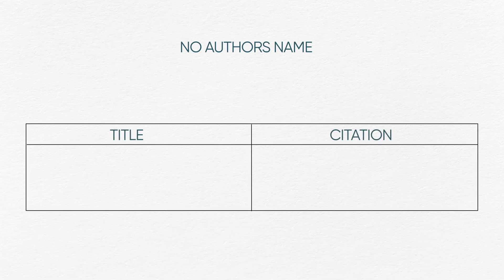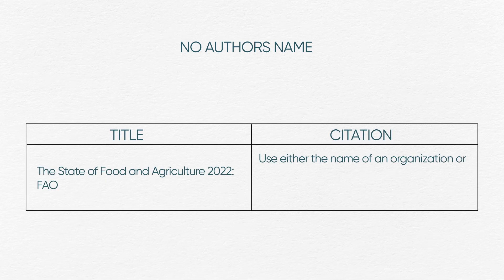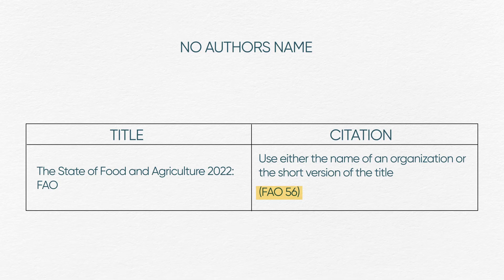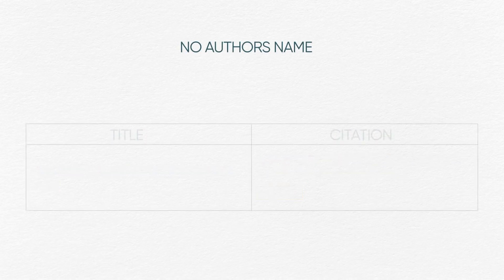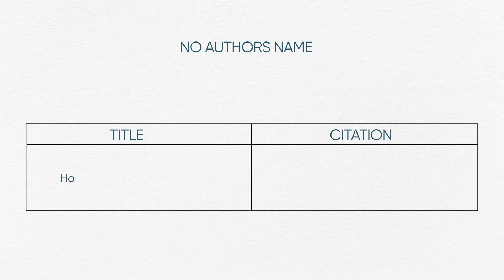If you do not know the author's name, then you can use either the name of the organization or a short version of the title as shown here. Here, FAO is the organization and 56 is the page number. Similarly, the title is 'How to Lose Weight in 60 Days' and the citation is 'How to' in quotation marks.